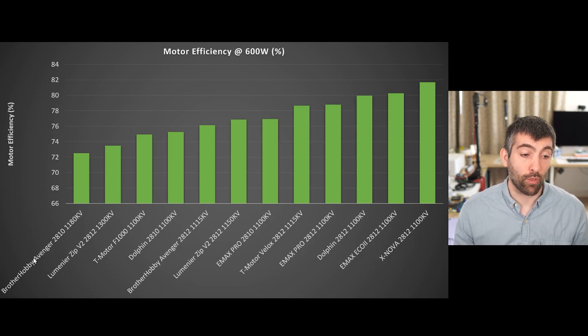Down the bottom end again we've got the Brother Hobby Avenger 2810 really struggling, as is the Lumineer Zip V2 1300, again just that slightly higher kV. The Lumineer Zip V2 with a lower 1150 kV is doing much better in terms of efficiency, and so that kV is much better matched to the prop that it's trying to spin. Again you can see a big variation, so if you're looking for a motor that's more efficient, you're definitely going to be wanting to pick one that's at the top of this list. If you're more focused on power or responsiveness, then you're probably going to be selecting on other criteria.